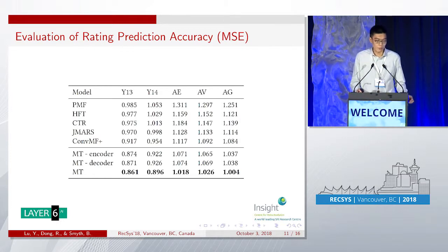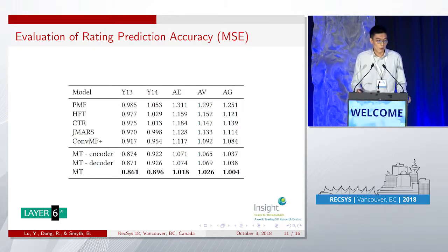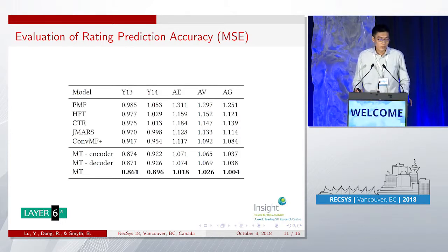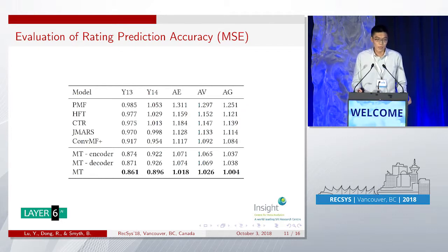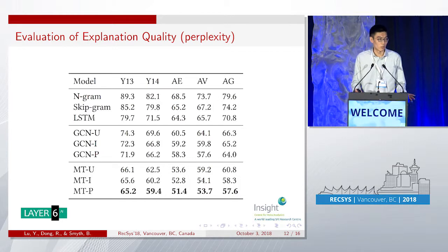We observe that if we optimize the sequence-to-sequence model via maximum likelihood estimation, the generated explanation will only contain general words rather than personalized content. Therefore, we adopt an adversarial training strategy — we train a convolutional neural network for evaluating and assigning rewards to the reviews generated by the sequence-to-sequence model according to the level of personalization. This encourages the sequence-to-sequence model to generate more personalized explanations.